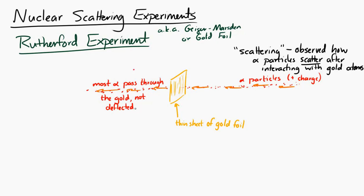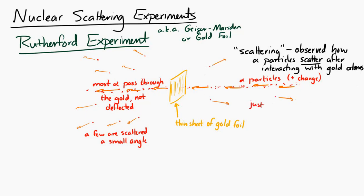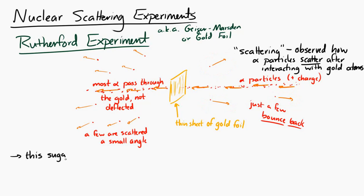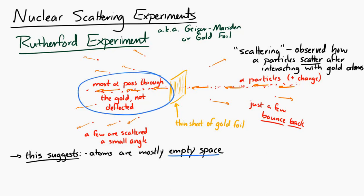A few of the alpha particles are deflected a small angle, or maybe even a larger angle. And rarely, but notably, some of the alpha particles actually bounce back off of the gold atoms. The conclusions reached by Rutherford, Geiger, and Marsden were that the atoms are mostly empty, because most of the alpha particles just go through the gold foil unaffected — so it's mostly empty space.